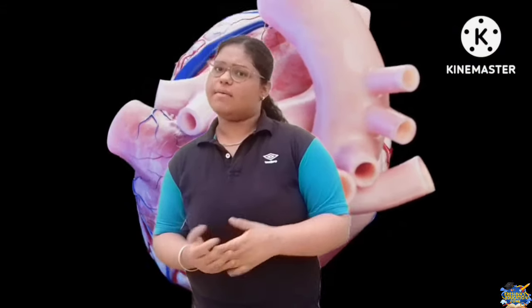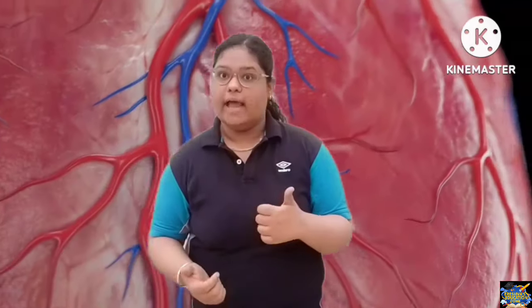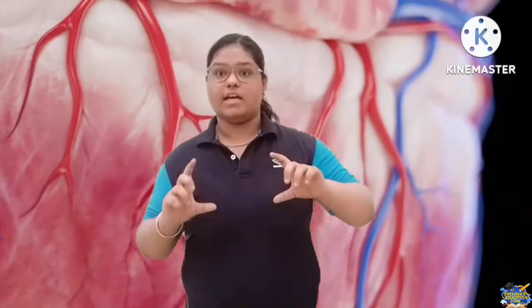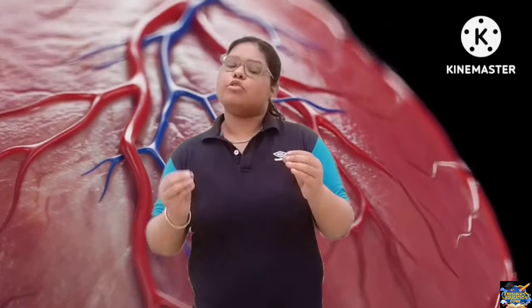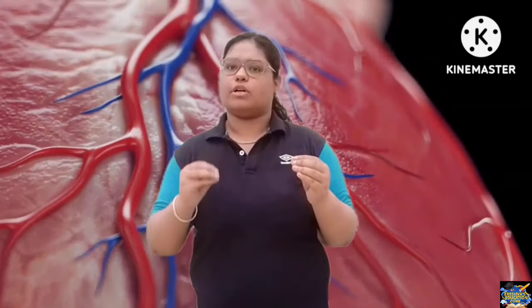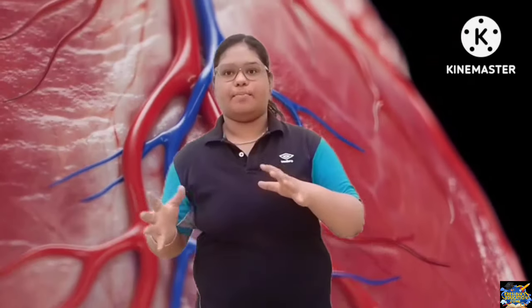The heart is located in our chest cavity. It is tilted, which means that the left side of the lung is slightly smaller as compared to the right side lung, because the heart occupies more space on the left side.